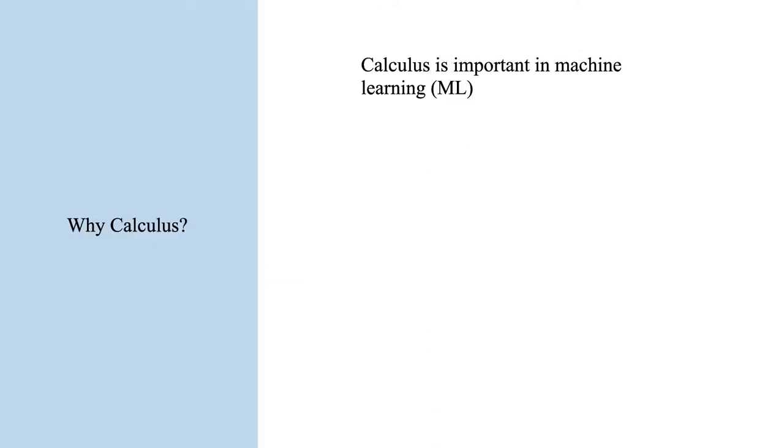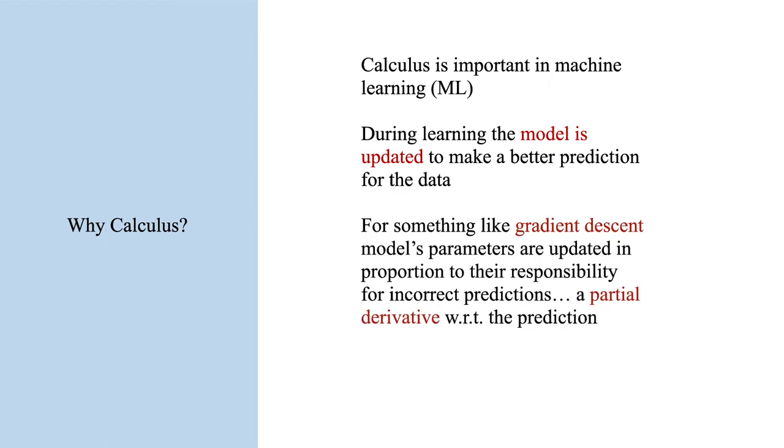So hopefully that kind of stuff is second nature to you, because calculus is very important in machine learning. During learning, this model is going to be updated, and how are we going to do that? Well, the prediction, to make the model better, we need to change those parameters in such a way that they are updated according to their responsibility for incorrect predictions.